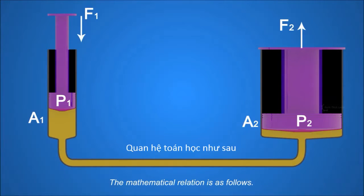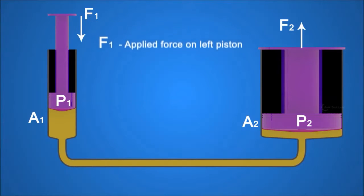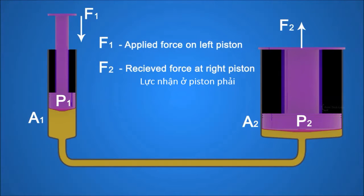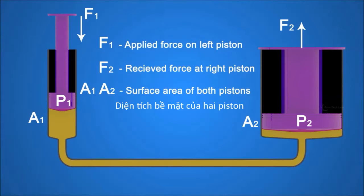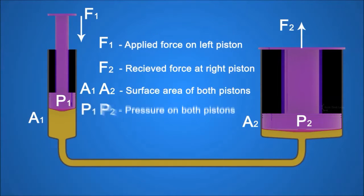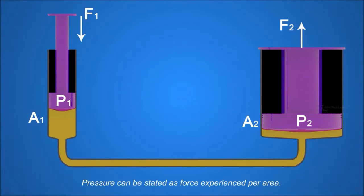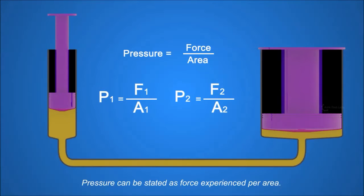The mathematical relation is as follows. F1 is the applied force on the left piston. F2 is the received force at the right piston. A1 and A2 are the surface areas of both pistons. P1 and P2 are the pressures experienced by both pistons. Pressure can be stated as force experienced per area.